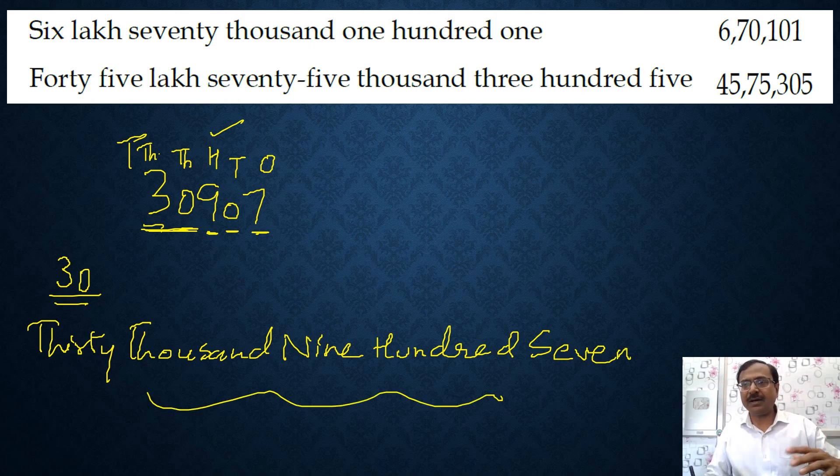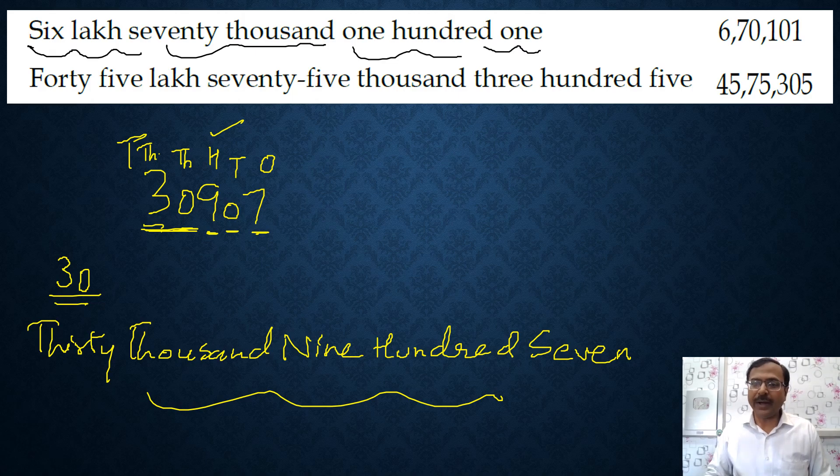Now this is the other way around when you are writing the number name. How do you write the numeral from the given number name? This is something important and this is what we have demonstrated there. You look at this: six lakh seventy thousand one hundred one.